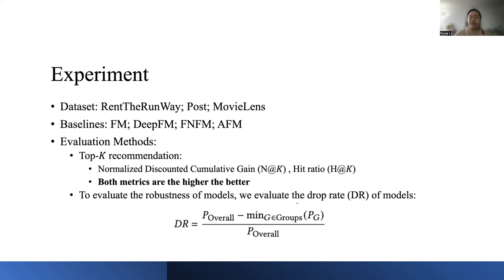and group 3 contains users over 40. We tested the performance of models, not only on the overall testing set, but also on each of these subsets, which contain different selection bias. We calculated the drop rate of the model based on the overall testing performance and the worst performance on the subsets. The drop rate is the lower, the better.